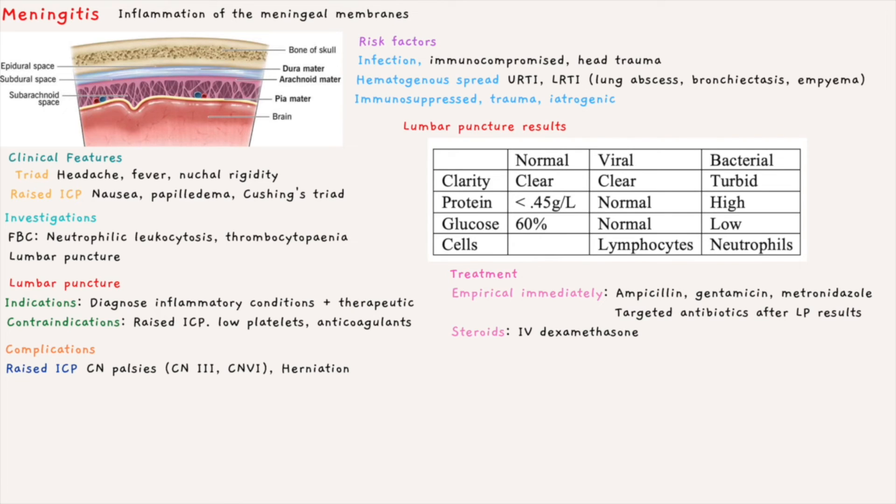Raised ICP can lead to cranial nerve palsies, especially oculomotor and abducens nerve. Fatally, it can lead to herniation syndromes, which can compress the cardiorespiratory centers in the medulla.